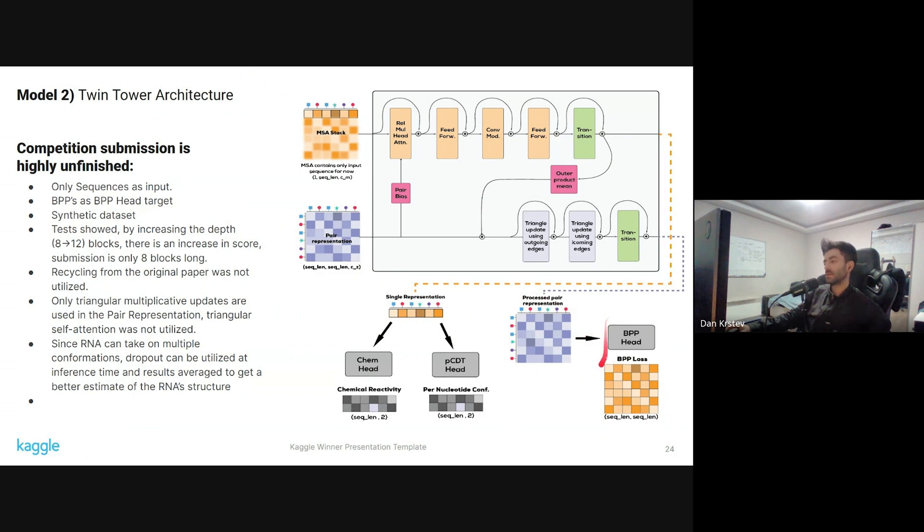But however, BPPs can be used as a target from the BPP head. I've tested this and it actually gave improvements in the final score. So we can use only sequences as input during inference time, but during training time we can train the model also on the base pair probabilities. So we can make the model during inference to only use a single input for the predictions. This model, even though synthetic data set was available, was not trained on the synthetic data set again during, because of time restrictions.